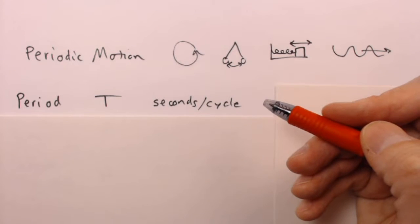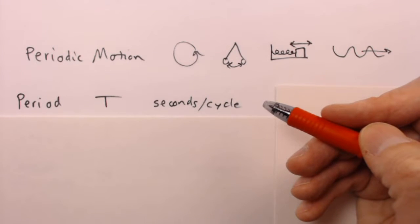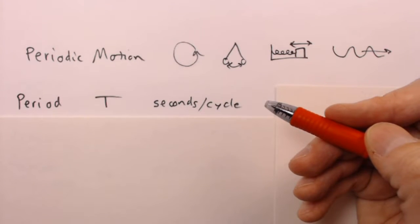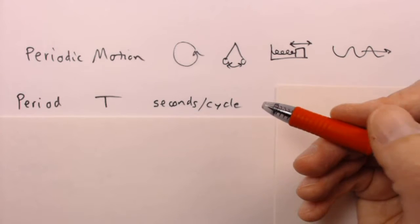You don't have to use seconds. Really any time unit will do: minutes, hours, days, years, what have you. For example, planet Earth has a period of revolution around the Sun equal to one year.